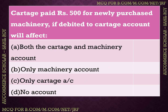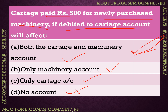Next question: cartage paid 500 rupees for newly purchased machinery, but it was debited to cartage account. If debited to cartage account, which accounts will be affected? The correct answer is that both the cartage account and the machinery account will be affected — cartage account will show more balance, and machinery account will be understated. Only the cartage account is incorrectly affected, making option B the relevant choice.